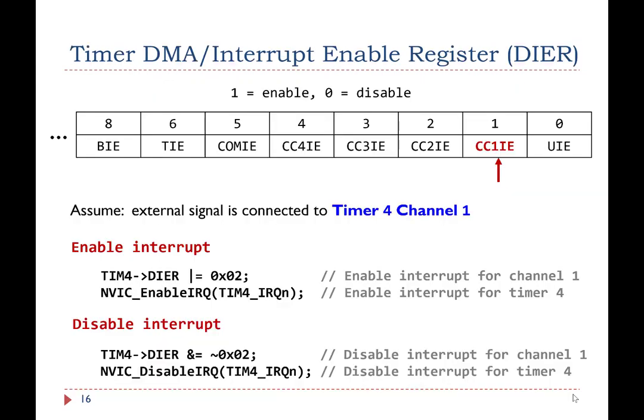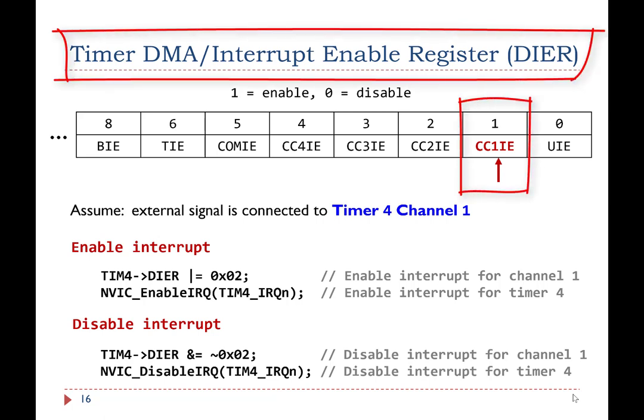Here is the example code to enable and disable the timer interrupts. If the external signal is connected to channel 1 of timer 4, software needs to set channel 1 interrupt enable CC1IE bit of DIER register to 1.